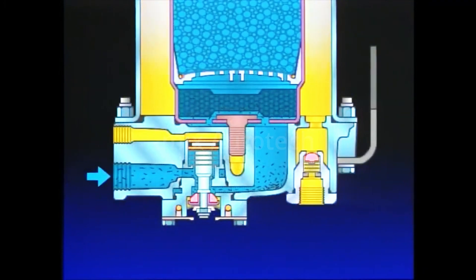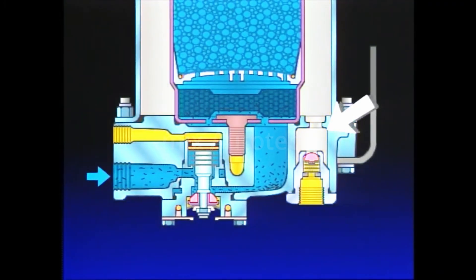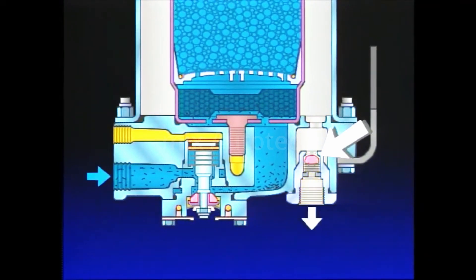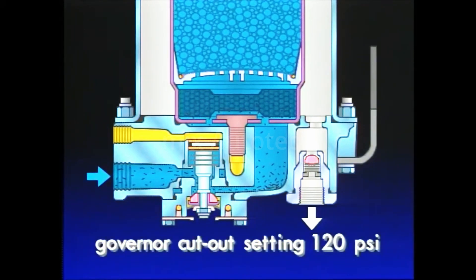Dry air in the purge volume flows toward the end cover and passes through the single check valve, out the delivery port, and to the supply reservoir. The air dryer will remain in the charge cycle until air brake system pressure reaches the governor cutout setting of 120 psi.